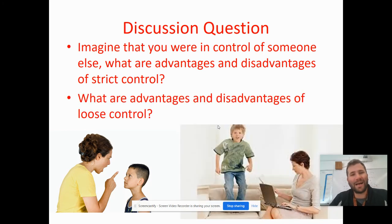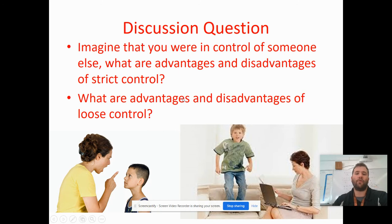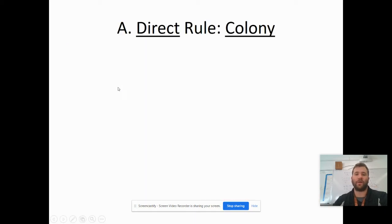Loose control doesn't cost as much and doesn't take as much effort — kind of like this mom with the kid jumping up and down. It doesn't take as much time or money. But the person's not going to do what you want them to do. They might act out, they might question your way of doing things. So for British, French, and Americans, they had to think: if we are going to take over these places, should we strictly or loosely control them? Your colony in your project is going to be strictly or loosely controlled.